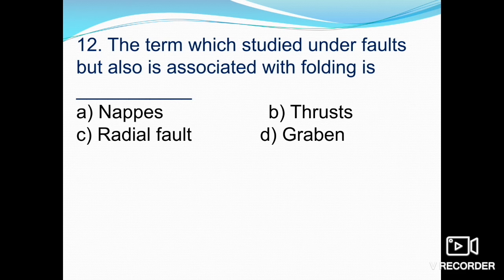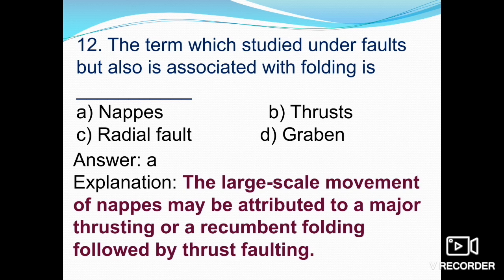The twelfth question: which term is studied under faults but also associated with folding — nappe, thrust, radial fault, or graben? The answer is nappe. The large-scale movement of nappe may be attributed to a major thrusting or a recumbent folding followed by thrust faulting. Nappe structures formed due to denudation processes include outliers, klippes, and windows. The correct answer is A, nappe.